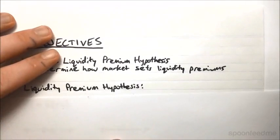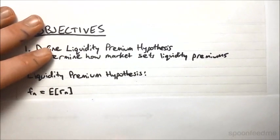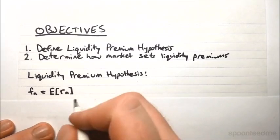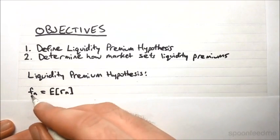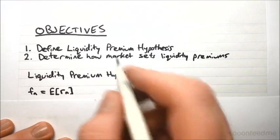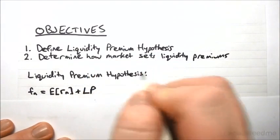So remember that the expectations hypothesis said that the forward rate is simply equal to the expected future short rate. The liquidity premium hypothesis is actually just an extension of this, which says that the forward rate still depends on the expected future short rate, but then adds on what's called a liquidity premium.